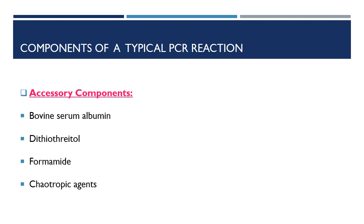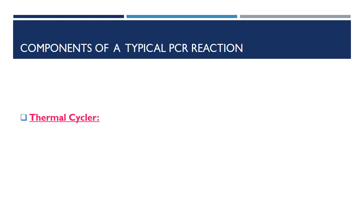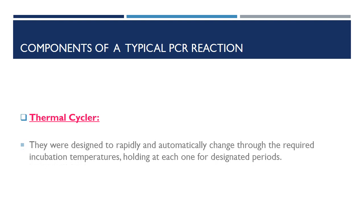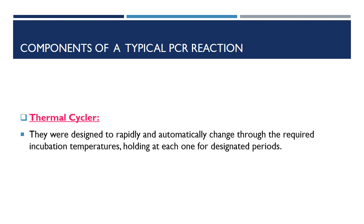Thermal cycler. Initially, PCRs were performed using multiple water baths or heat blocks set at the required temperatures for each of the steps. The tubes were moved from one temperature to another by hand. Before the discovery of thermostable enzymes, new enzymes had to be added after each denaturation step, further slowing the procedure and increasing the chance of error and contamination. Thermocyclers were thus designed to rapidly and automatically run through the required incubation temperatures, holding at each one for designated periods.